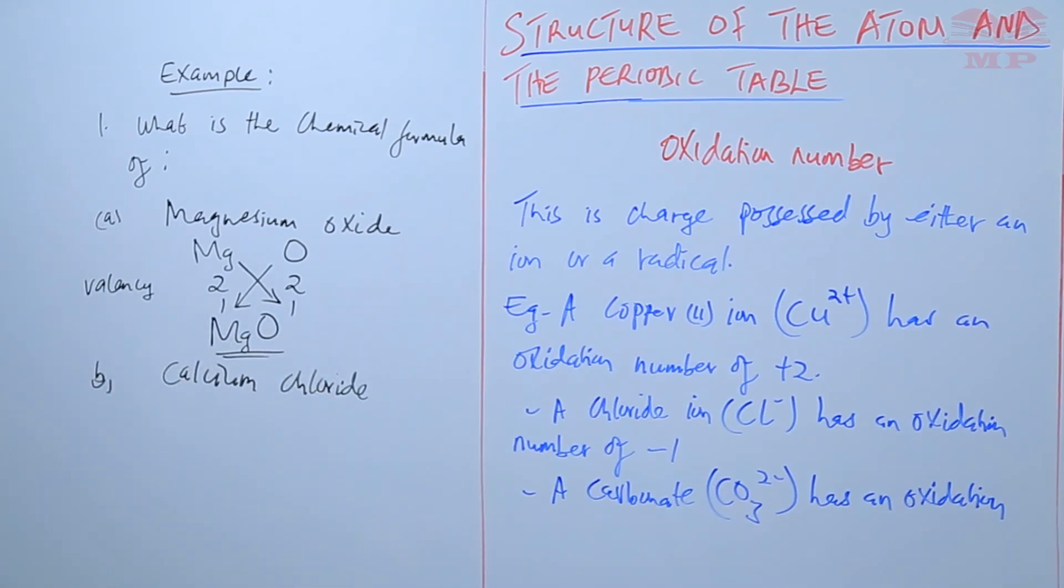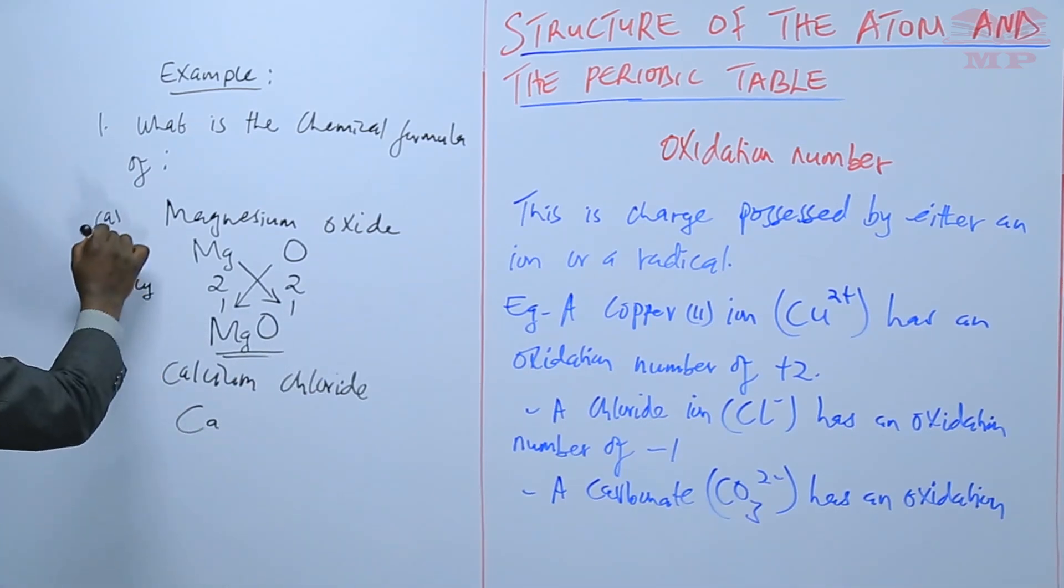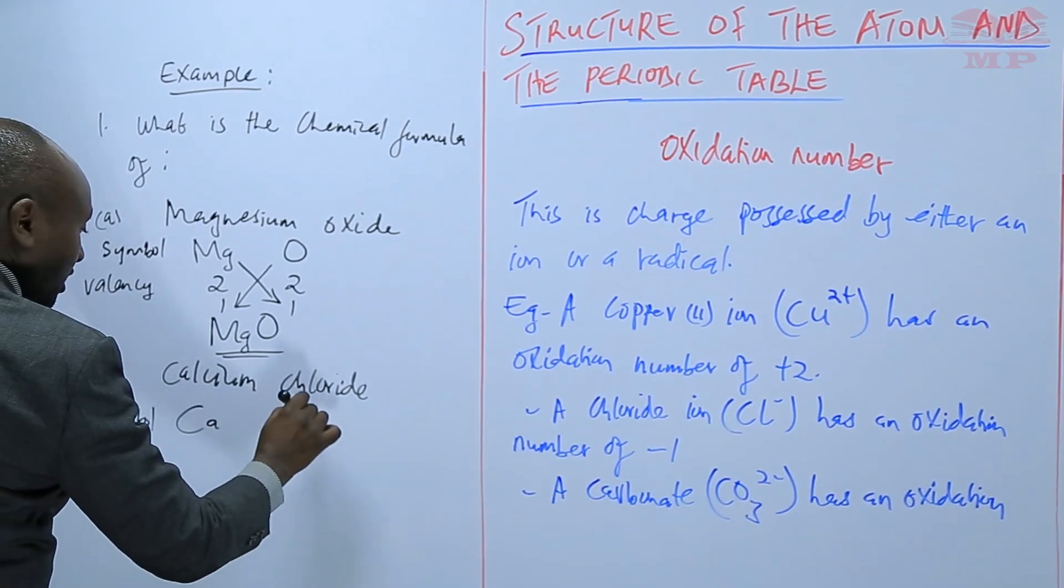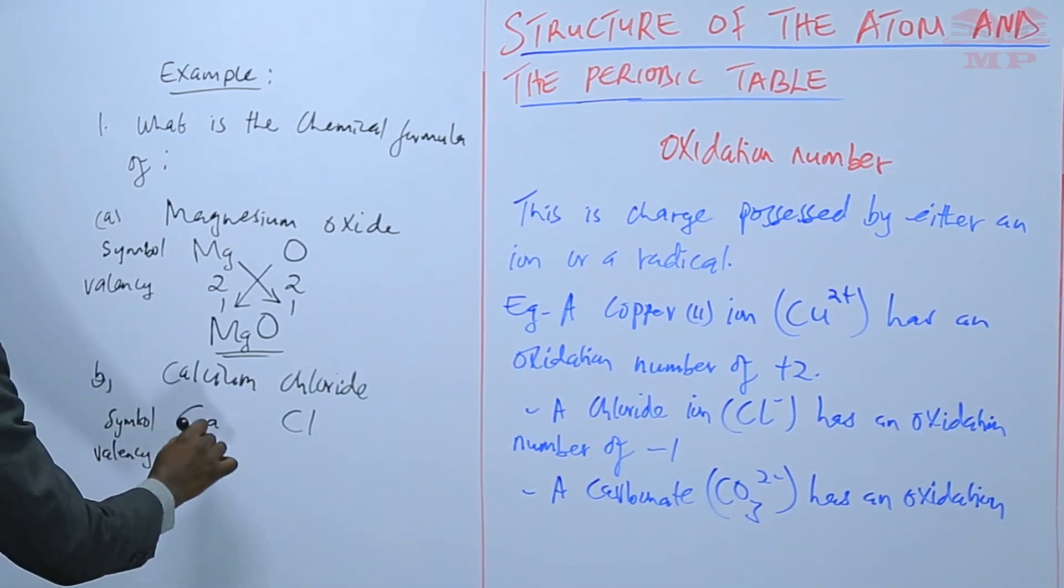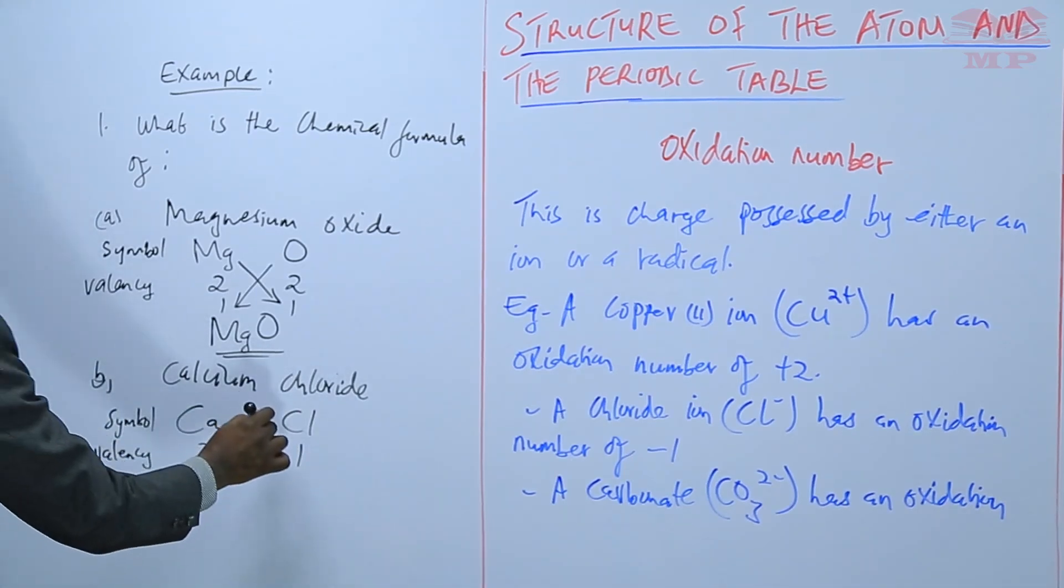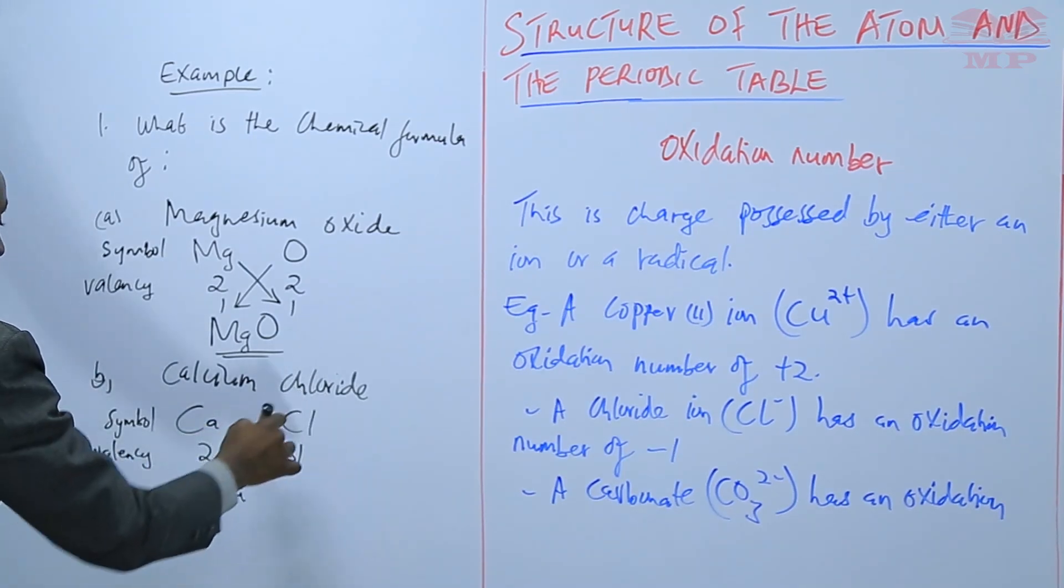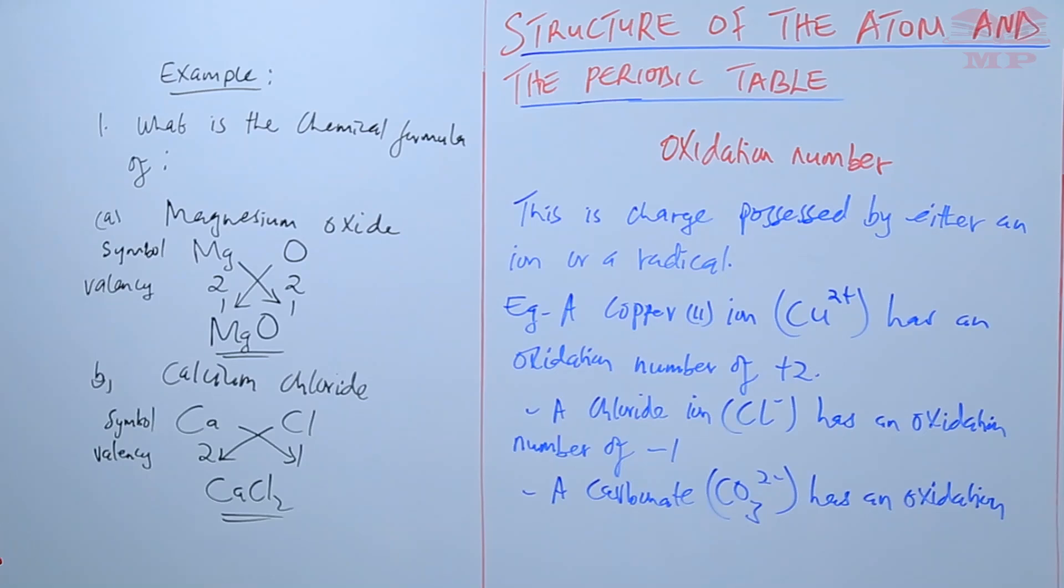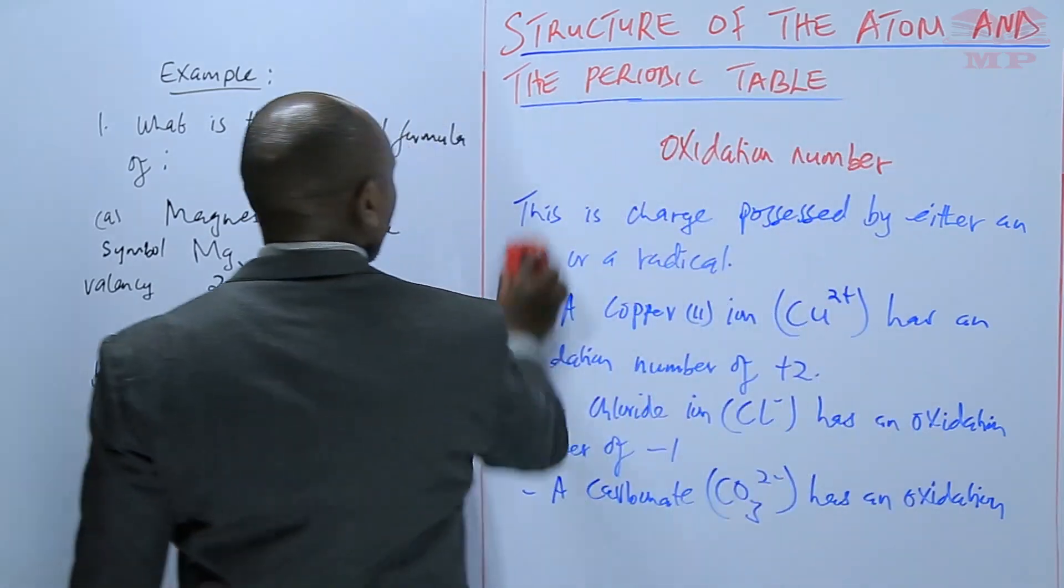So for calcium chloride the symbol, so we start with the symbol, and then chloride is from chlorine. The valency is 2, the valency here is 1, so here you don't simplify, you just cross multiply. So calcium multiplied by 1 is calcium, chlorine multiplied by 2 is Cl2. That's the valency for calcium chloride. So basically that's how we use the valencies to write the chemical formula.